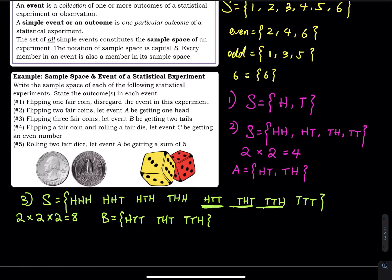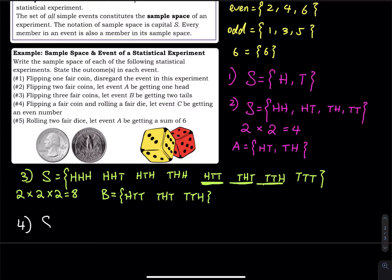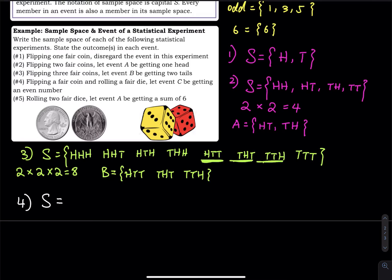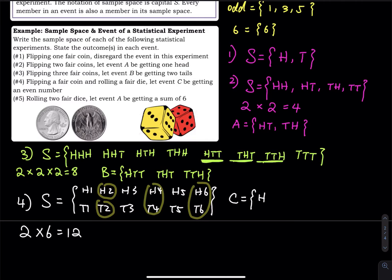Number four: you flip a fair coin and roll a fair die, with event C being getting an even number. The coin has two faces, the die has six faces — so two times six equals 12 outcomes in the sample space. I list all the head outcomes first: H1, H2, H3, H4, H5, H6. Then all the tail outcomes: T1, T2, T3, T4, T5, T6 — that is 12 outcomes. Event C, getting an even number, is: H2, T2, H4, T4, H6, T6.